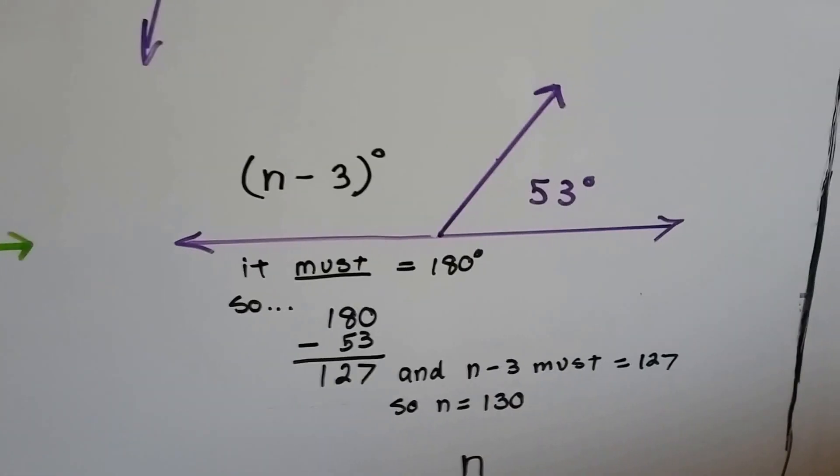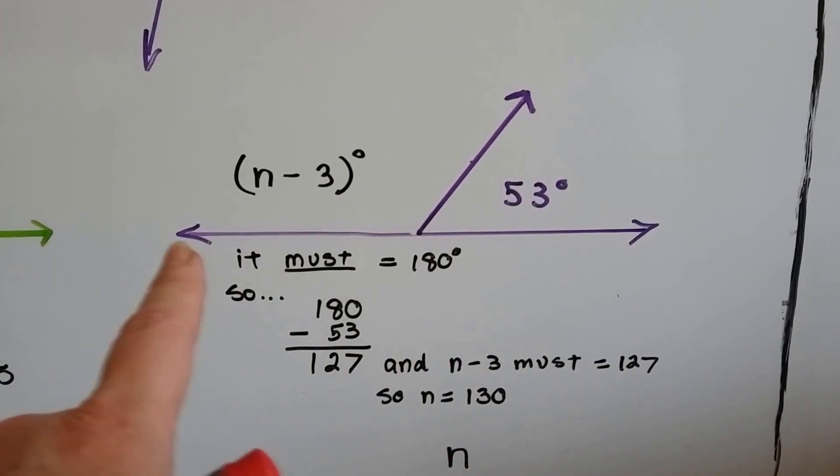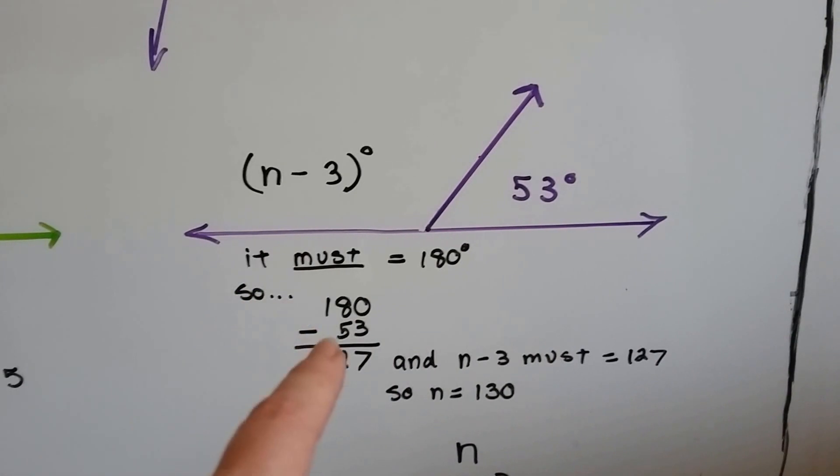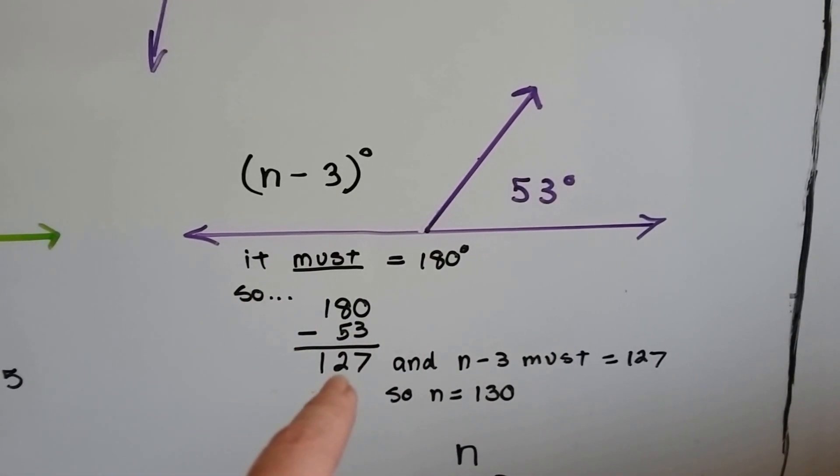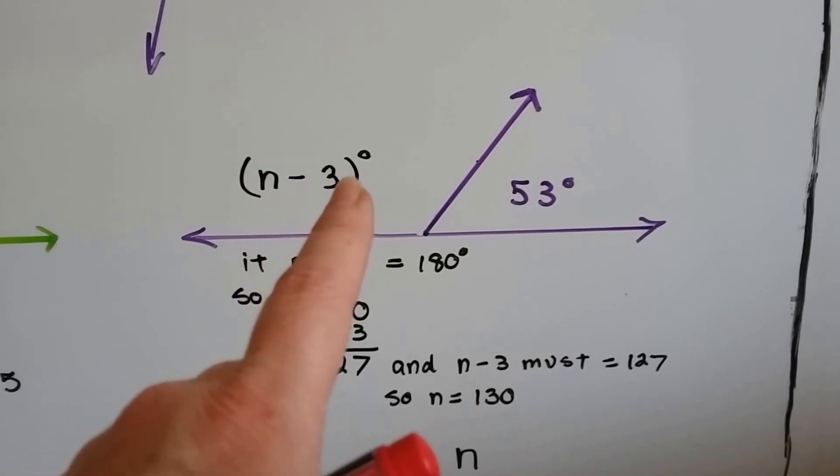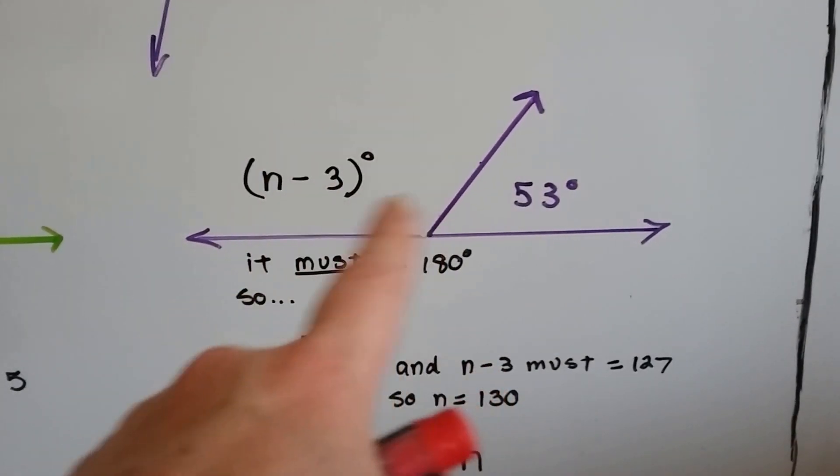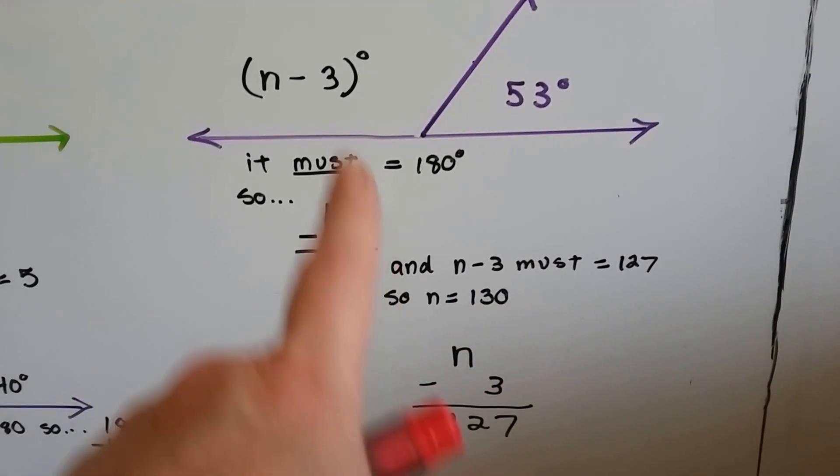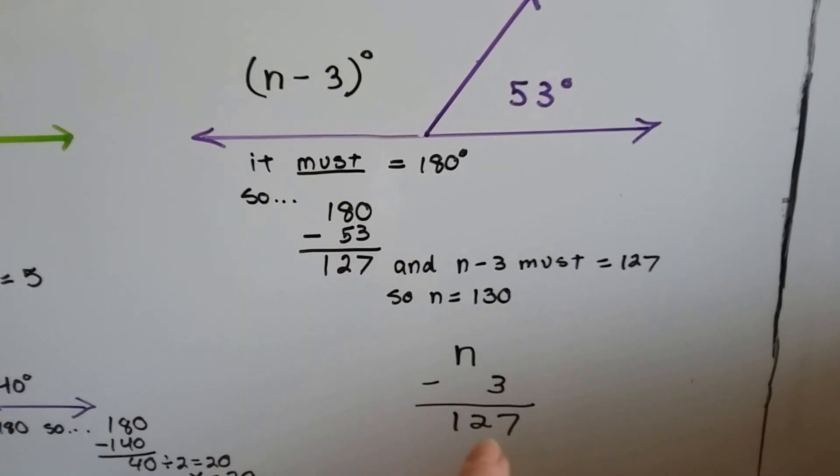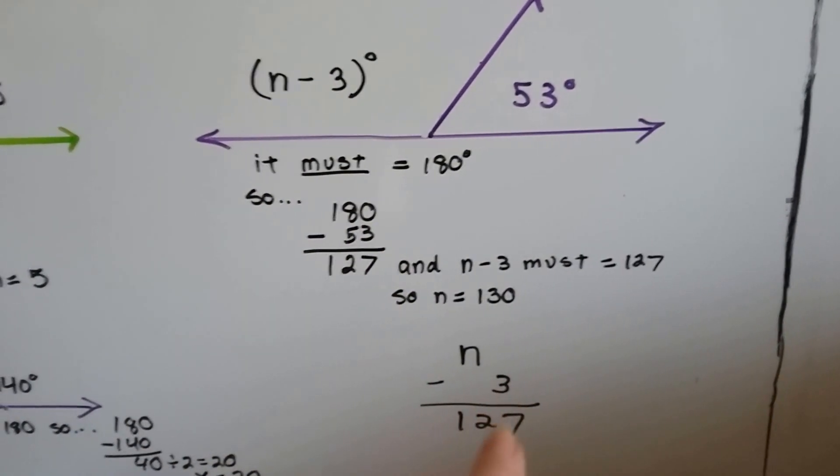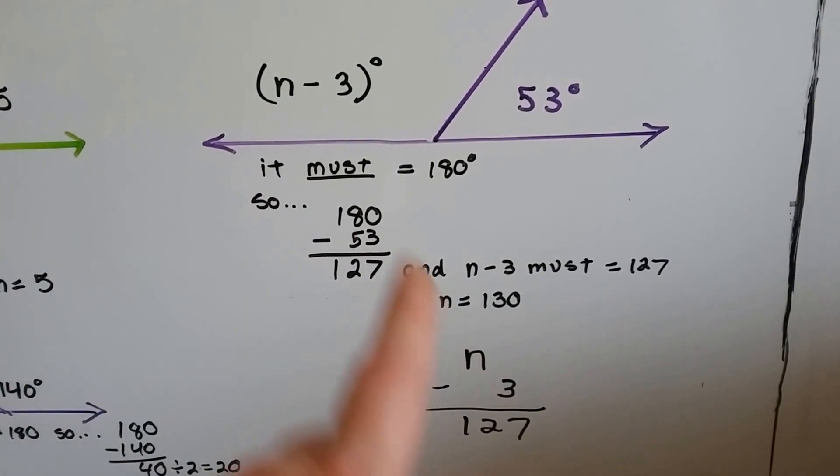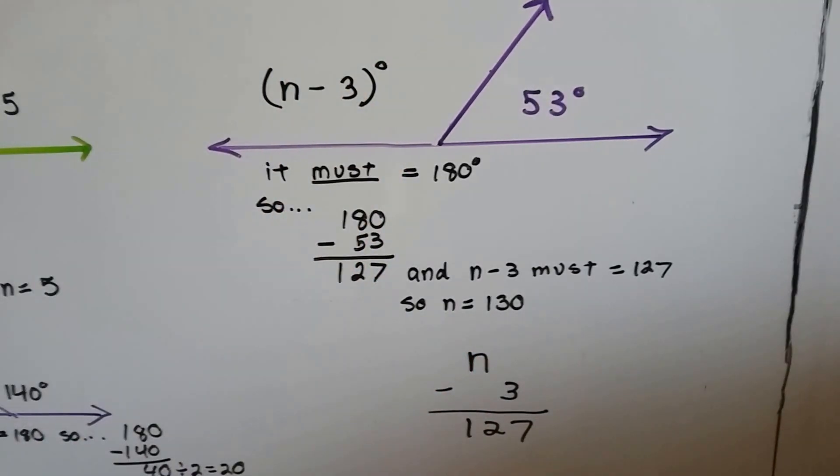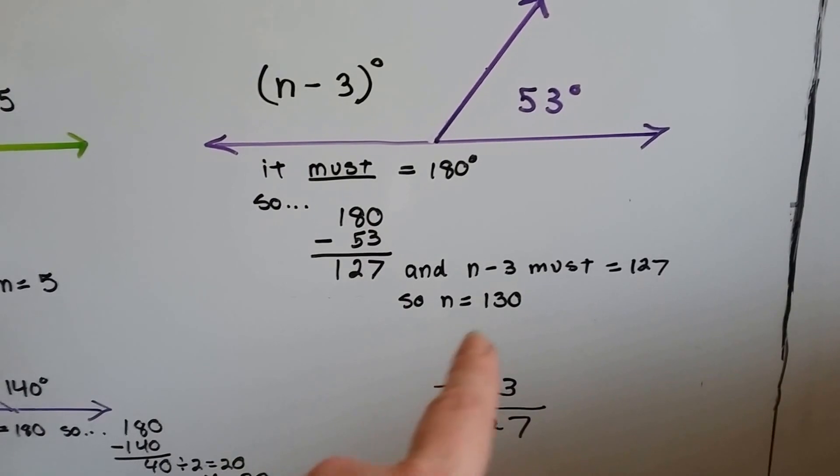Same thing if we do subtraction. We know this must be 180 degrees because it's a straight angle. Well, if that's 53, we do 180 for the straight angle and we take away the 53. So now there's 127 left. Well, this says n minus 3 is this angle. And this angle must equal 127. So n must be 130. Because if you have n and you minus 3 and then you get 127, you must have 127 plus 3 to get to the n. Because it took away 3. So if this is 127, it must be 3 more than that to be able to take the 3 away. So n equals 130.